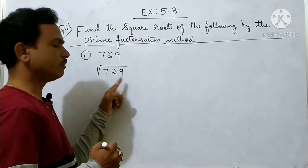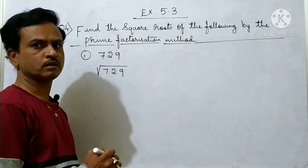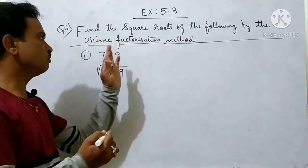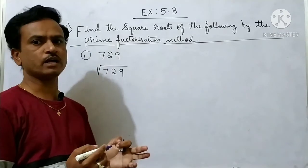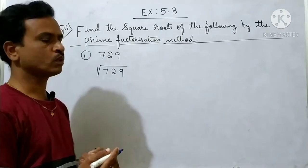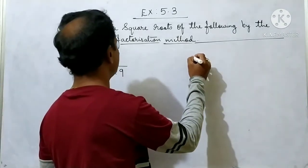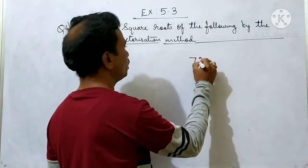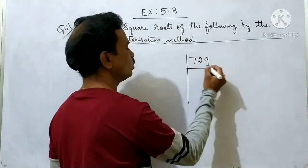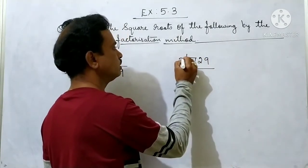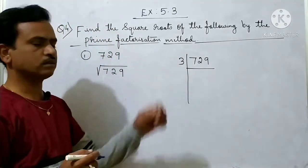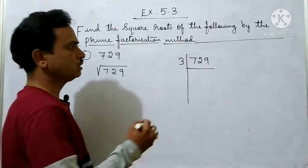For the prime factorization of 729 — prime factorization means we should divide 729 by prime numbers. Here we take 729 and divide it by 3, because it is an odd number, so we can take 3 here.